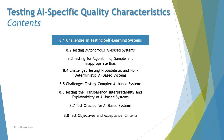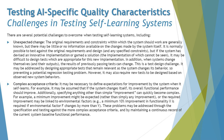In section 8.1, we're talking about the challenges in testing specifically the self-learning system — systems which are capable of adapting to transformation in data over a period of time, taking their own learning steps and making decisions appropriately. There are challenges related to this when a tester approaches such systems. The very first challenge is unexpected change. The original requirements and constraints within which the system should work are generally known, but there may be little or no information available on the changes made by the system itself.